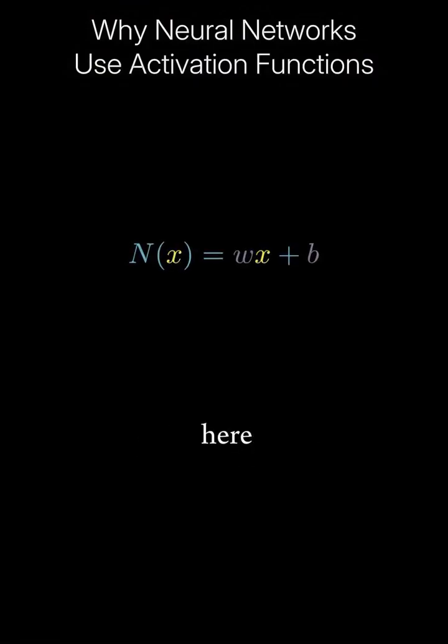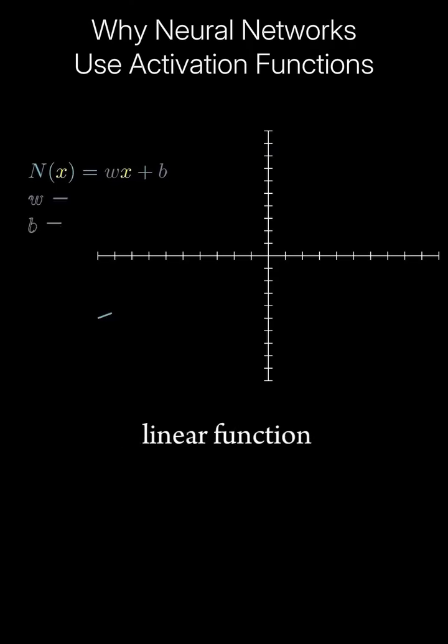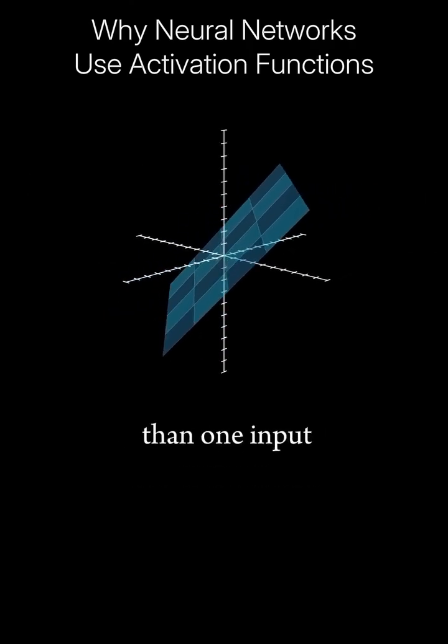The neuron, as we've defined it here, works like a building block. It is actually an extremely simple linear function, one which forms a flat line, or a plane when there's more than one input.